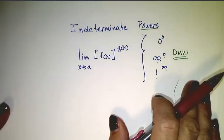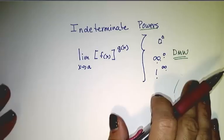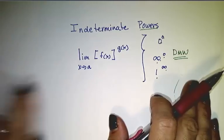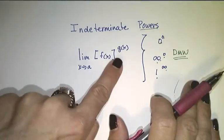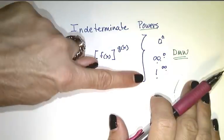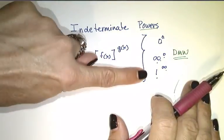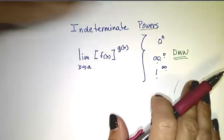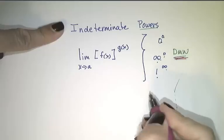This is our last video in our sequence for L'Hôpital's Rule and Indeterminate Forms. In this one we're going to explore indeterminate powers. When you're looking at a limit as x goes to a of a function of x raised to a function of x, and you get one of the following three forms — 0 to the 0, infinity to the 0, or 1 to the infinity — this is called an indeterminate power and you need to do more work.